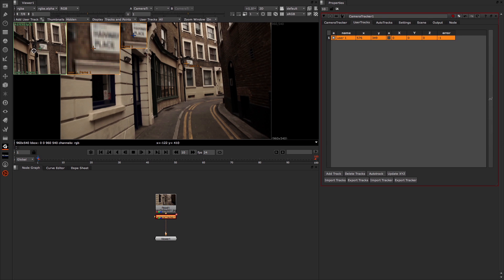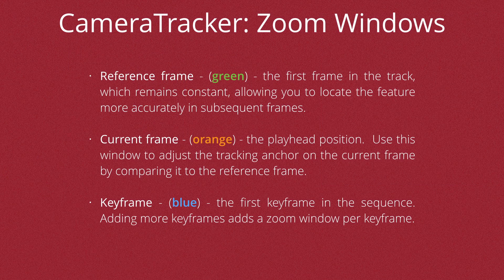At the top of the viewer, you'll notice that we have these three boxes with a green, orange, and blue cross in them. The green indicates the reference frame — this is the first frame in the track which remains constant, and allows you to locate the feature more accurately in subsequent frames. The orange represents the playhead position, the current frame, and we can use this window to adjust the tracking anchor on the current frame by comparing it with the reference frame. The blue is the keyframe, the first keyframe in the sequence.